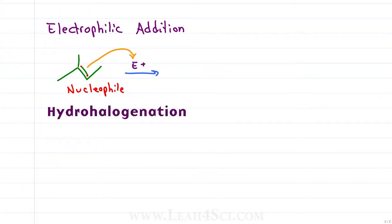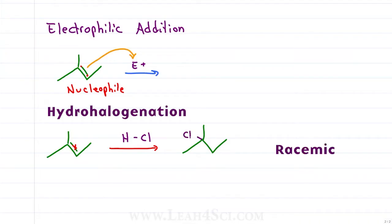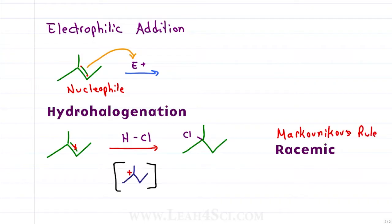Starting with hydrohalogenation — for example HCl — we break the pi bond and add the hydrogen to the less substituted carbon, and the chlorine or other halogen to the more substituted carbon, following Markovnikov's rule. Given that we have a carbocation intermediate, look out for a potential hydride shift in this reaction.